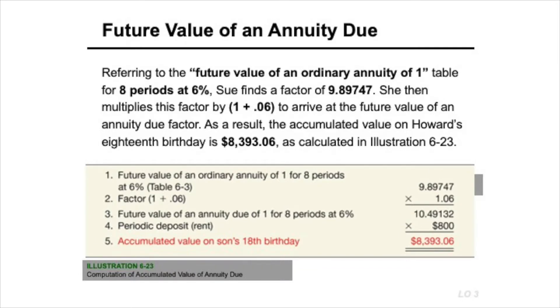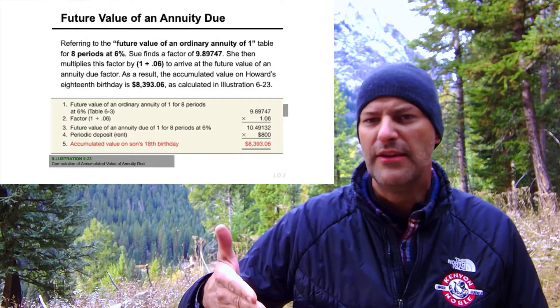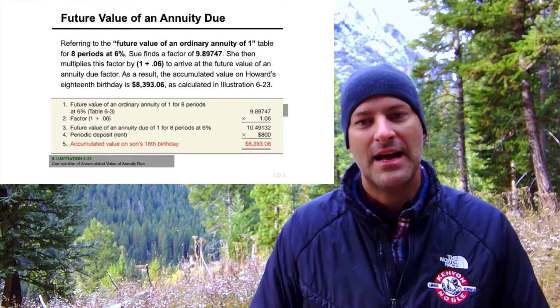Quick example — future value of an annuity due: eight hundred dollars for the next eight years at six percent compounding annually. The ordinary annuity factor for eight years at six percent is 9.89. Multiplying by 1.06 gives us a factor of 10.49. Multiply that times eight hundred dollars and we get eight thousand three hundred ninety-three dollars. That's how much you'll have accumulated over those eight years, with the first payment made today at the beginning of every period.